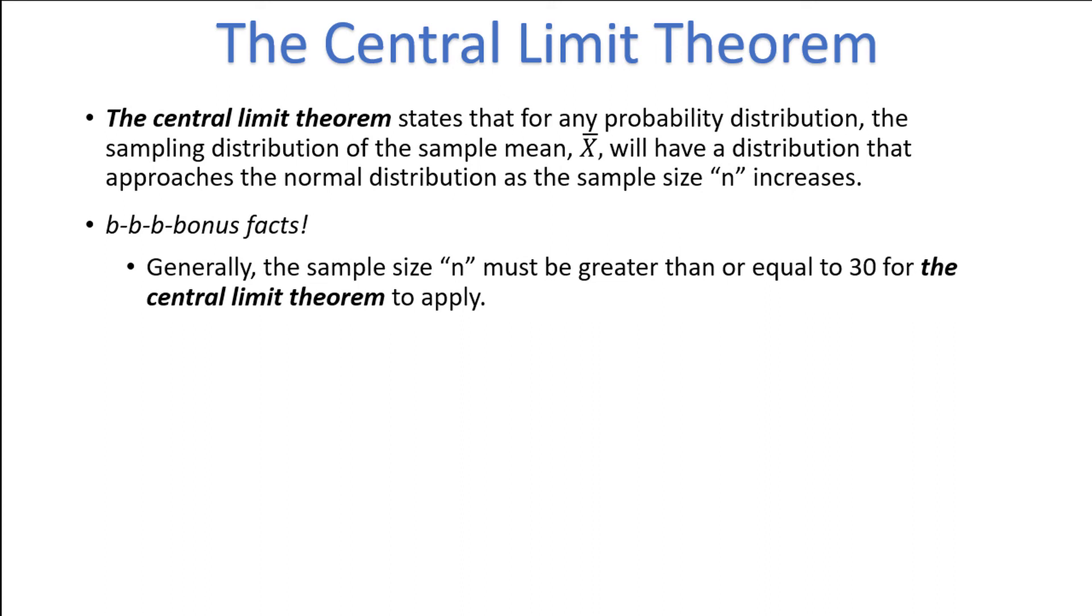Highly skewed distributions might need a slightly higher sample size to approximate the normal distribution, and distributions that are already approximately normal might need a much lower sample size, but we generally assume that n must be at least equal to 30 for the central limit theorem to apply.